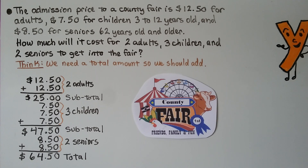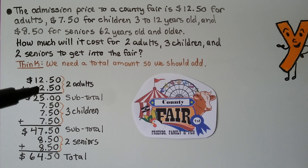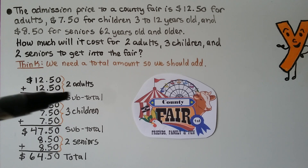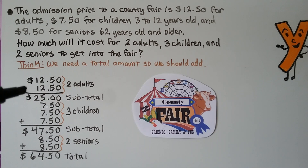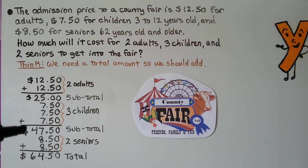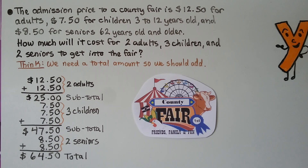The admission price to a county fair is $12.50 for adults, $7.50 for children 3 to 12 years old, and $8.50 for seniors 62 years old and older. How much will it cost for two adults, three children, and two seniors to get into the fair? We add the two adults — $12.50 and $12.50 — for a subtotal of $25. We add three children at $7.50 each, and our subtotal is $47.50. We add two seniors at $8.50 each, and our total is $64.50 for the family to get into the county fair.